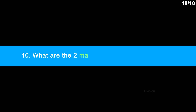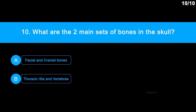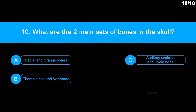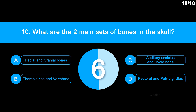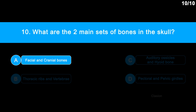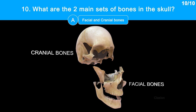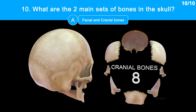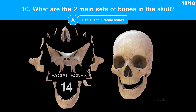Question 10: What are the two main sets of bones in the skull? Option A, facial and cranial bones. Option B, thoracic ribs and vertebrae. Option C, auditory ossicles and hyoid bone. Option D, pectoral and pelvic girdles. The correct answer is option A, facial and cranial bones. The bones of the skull can be considered as two groups: the cranium, consisting of 8 cranial bones forming the roof and base, and the facial bones, comprising 14 bones that make up the face.